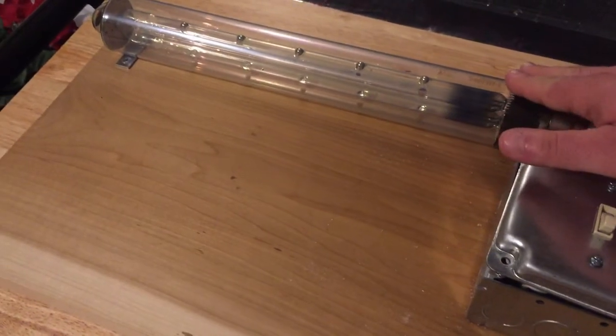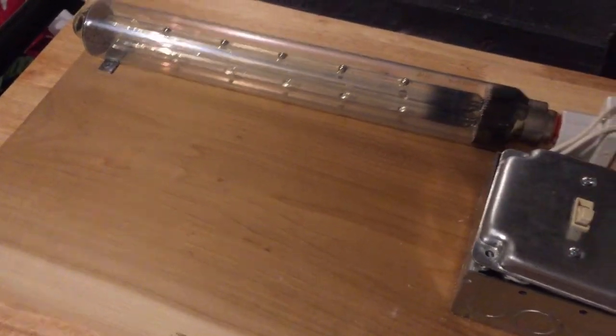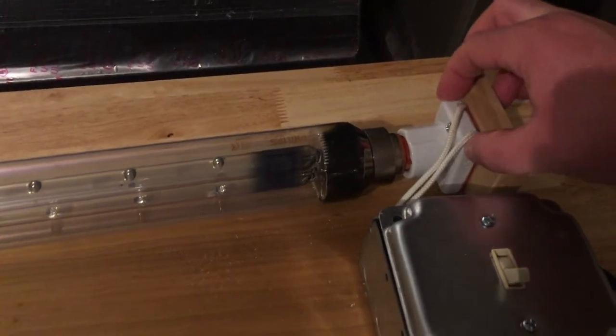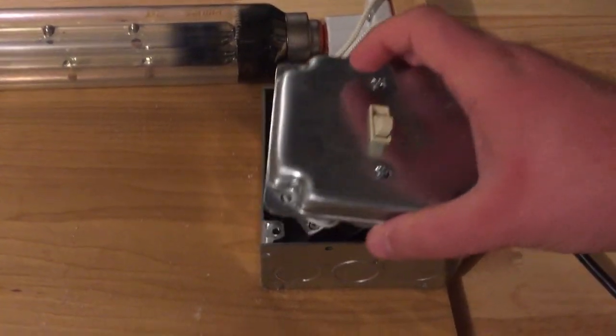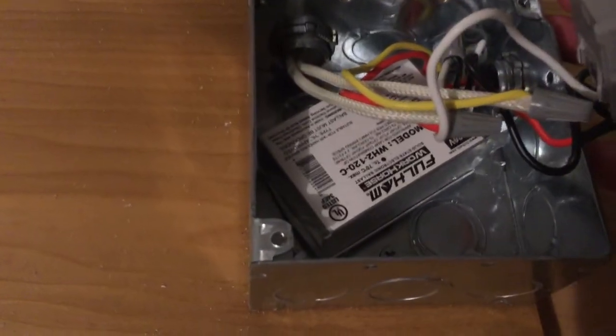The first component is the lamp, which is here. The second component is the mounting hardware for the lamp, which is here. And then the third component is the ballast, which is inside this electrical box.